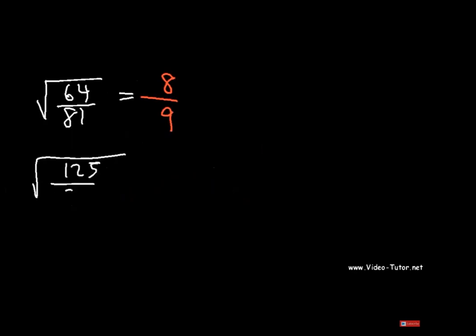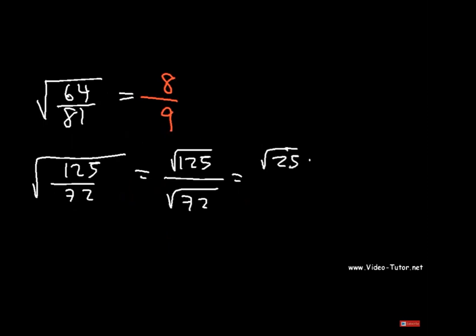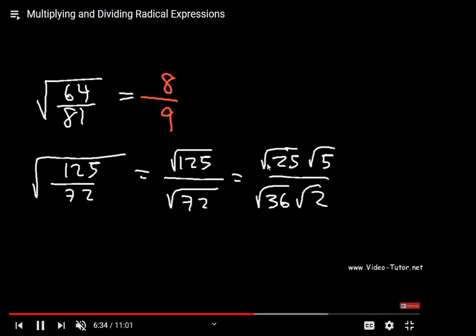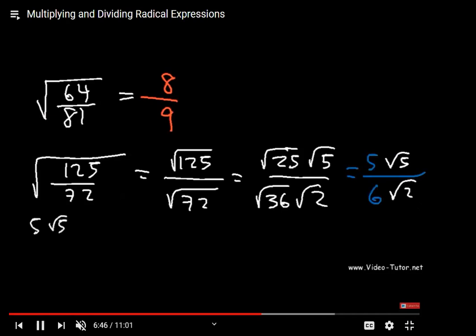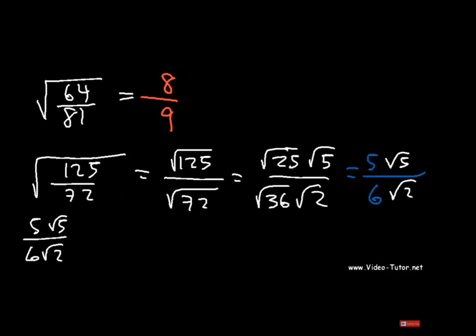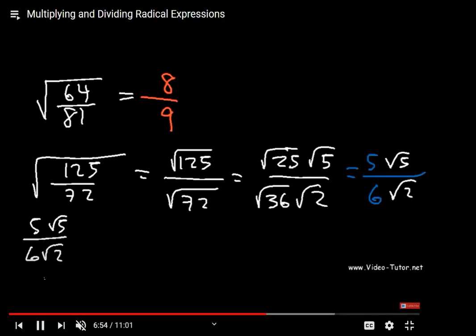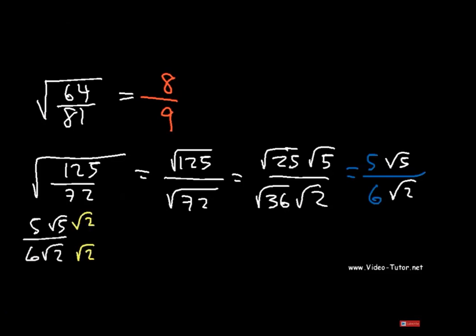Next example: √(125/72). We factorize: √125 = √25 × √5, and √72 = √36 × √2. Square root of 25 is 5 and square root of 36 is 6. Our simplified form is 5√5 / 6√2. This cannot be simplified further.